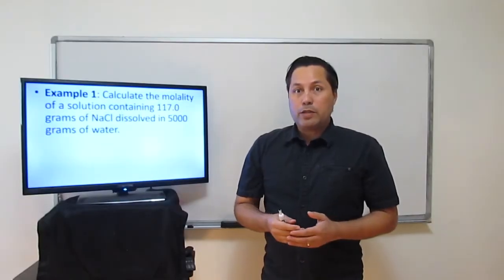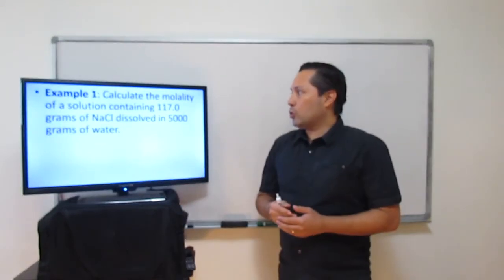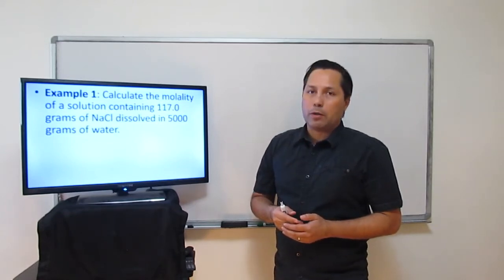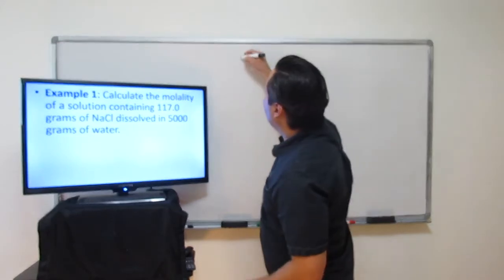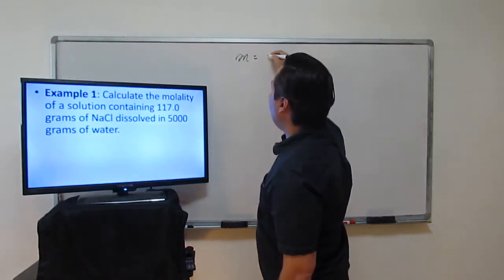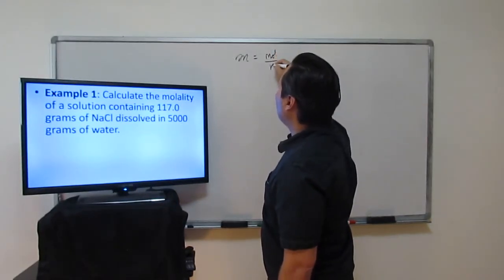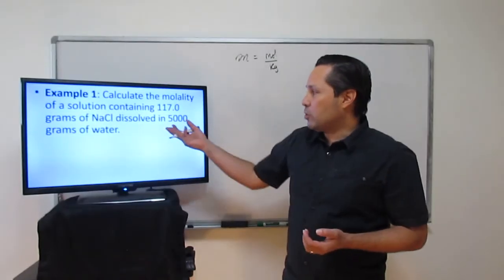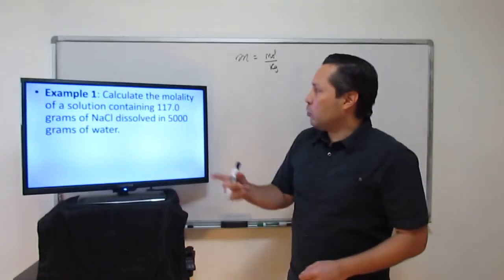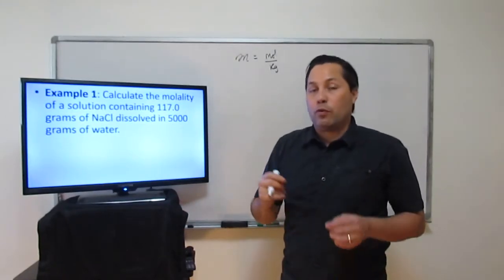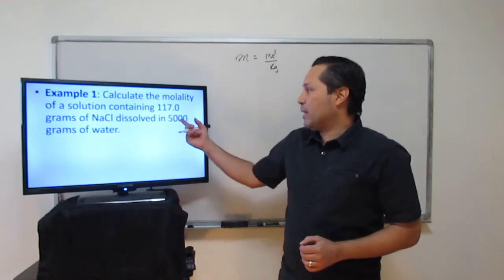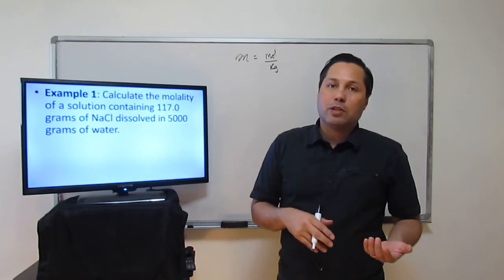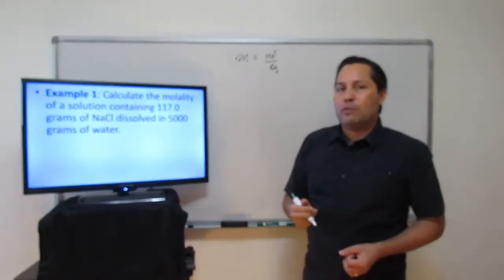In example 1 we're asked: calculate the molality of a solution containing 117 grams of NaCl dissolved in 5,000 grams of water. To solve for molality we need the following — molality (cursive M) is moles over kilograms, where the kilograms is for the solvent. In this case our solvent is water. We're going to have to change the 117 grams of NaCl from grams to moles, and change the 5,000 grams of solvent from grams to kilograms, then divide moles over kilograms to get our molality.